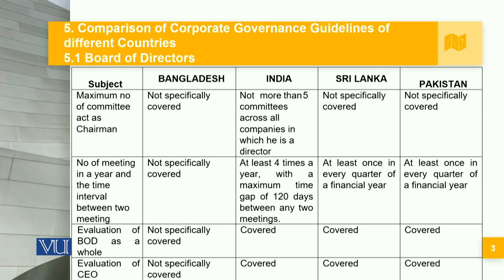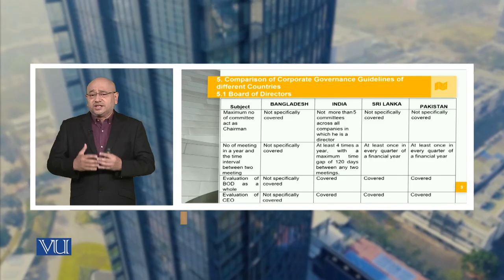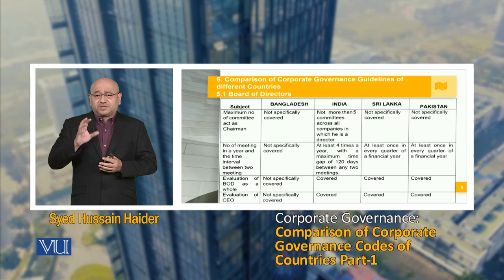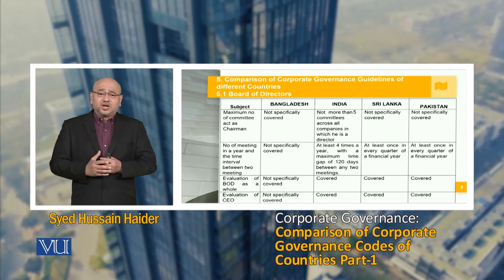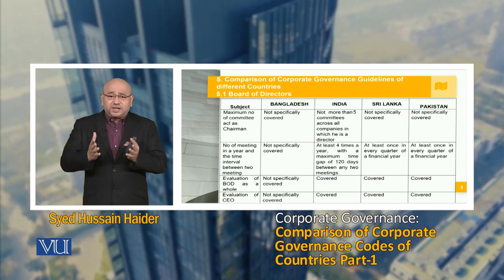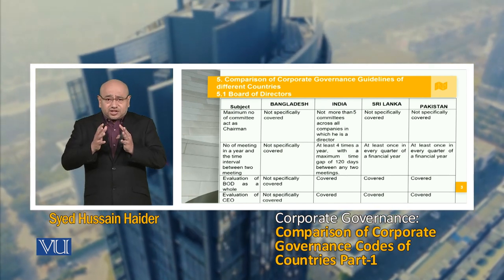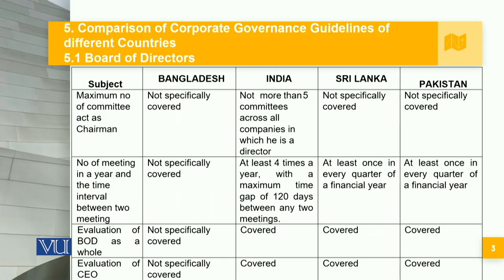When we are talking about the maximum number of committees in which a member can act as chairman or chairperson, in Bangladesh it is not specifically covered, nor is it in Sri Lanka and nor is it in Pakistan. However, in India, not more than five committees across all companies in which he or she is a director. So again, in the Indian code of conduct, it is specifically specified with an upper limit of five committees of which they can be chairperson. Regarding the number of meetings in a year, in Bangladesh it is not specifically covered and can be as and when required. In India, at least four times a year with a maximum time gap of 120 days between any two meetings. In Sri Lanka, at least once in every quarter of a financial year. And Pakistan, very similar to Sri Lanka, is at least once in every quarter of a financial year. So there's a lot of similarity, but there are finer points in which the four countries differ.